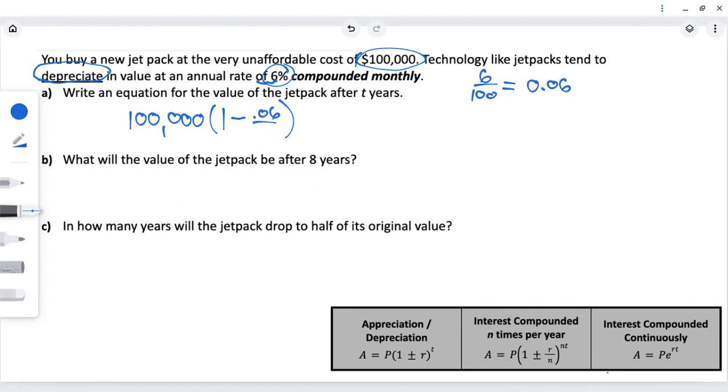If it's compounded monthly, that means the N will be 12. It doesn't matter how many years it's happening for, N just means how many times is it compounded per year. So, for this first one, it just says for T years, you can just leave T as T. You could answer it like this, or you could actually work out what the inside of the parentheses is equal to, which turns out to be 0.995.